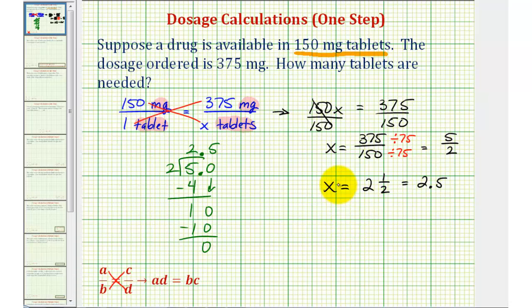So, to answer the question, if the dosage is 375 milligrams, we need 2.5 or 2 and 1 half tablets. I hope you found this helpful.